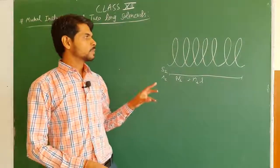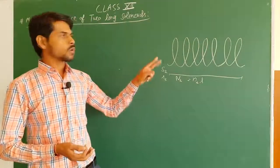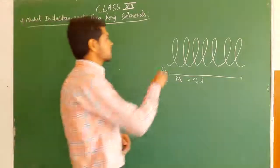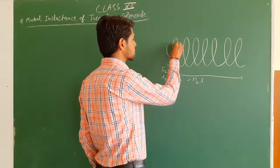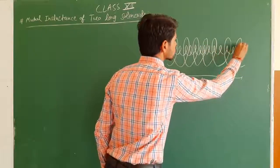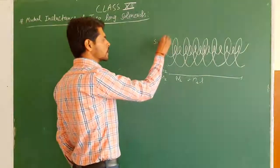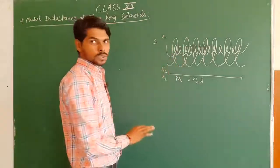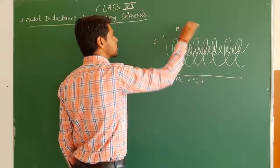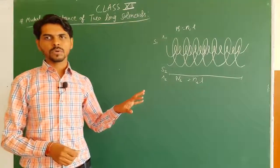We also have an inner solenoid S1, with radius R1 and the same length L. Total number of turns of S1 is N1 (= n1·L, where n1 is turns per unit length). Radius is R1.